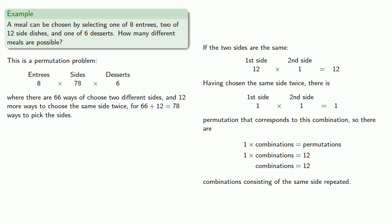So the total number of meals is 8 entrees times 78 choices of sides times 6 desserts.